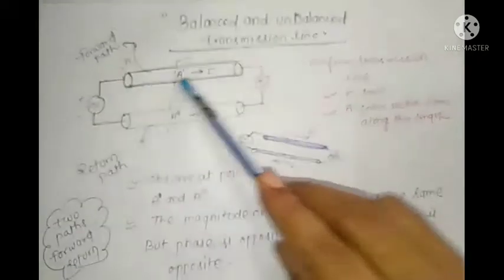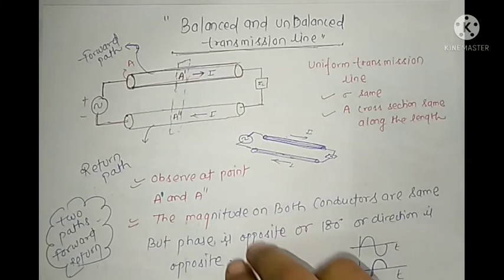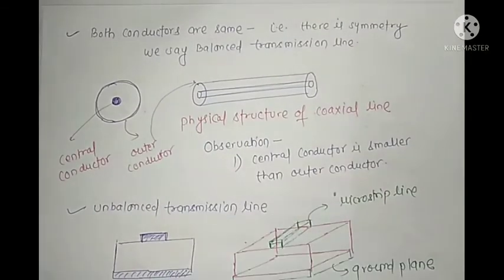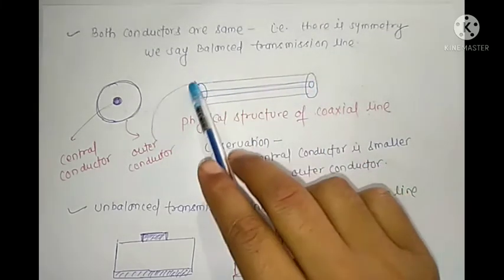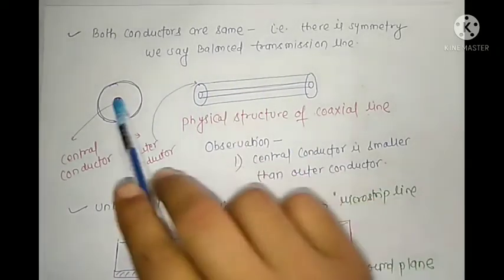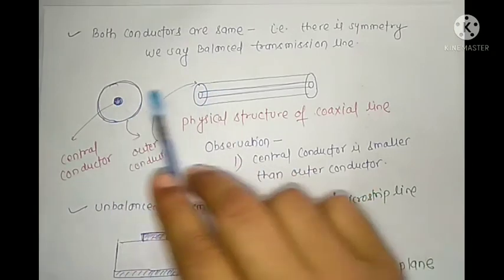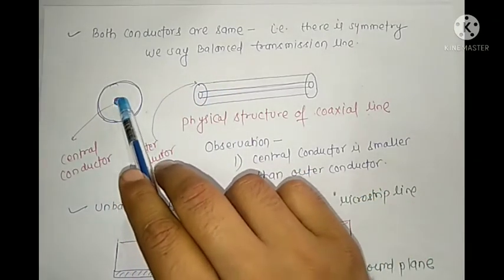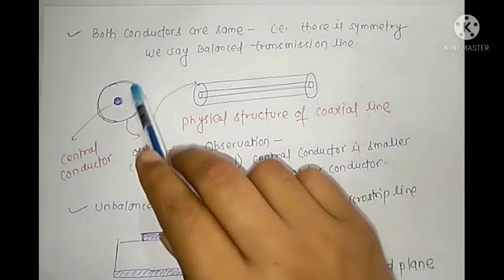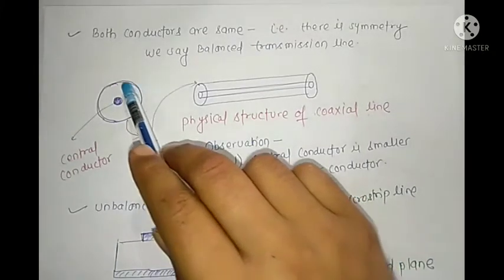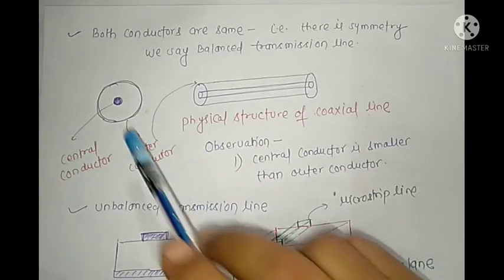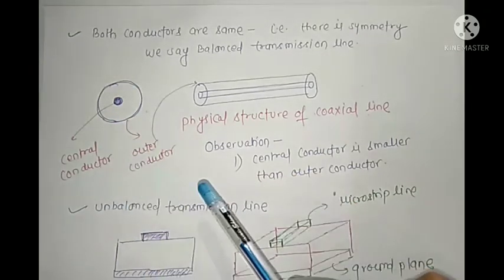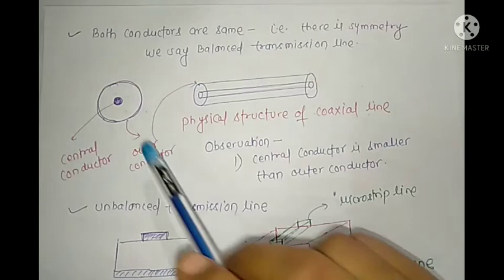Now let's observe the second geometry, which is known as the coaxial line. The coaxial line contains a central conductor and an outer conductor. Looking at the front view of the coaxial line, you can see the cross-sectional area of the central conductor is smaller than that of the outer conductor, because the outer conductor exhibits a larger cross-sectional area.